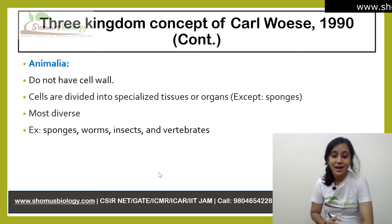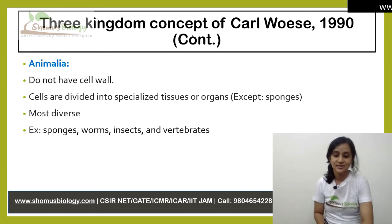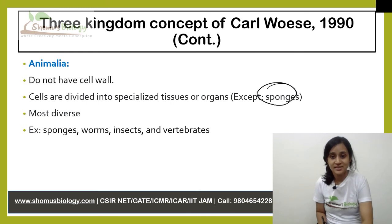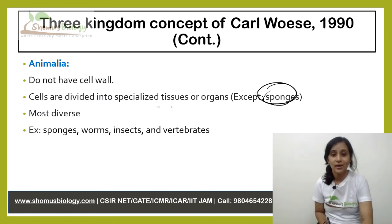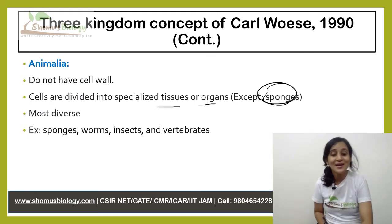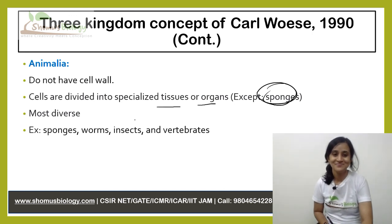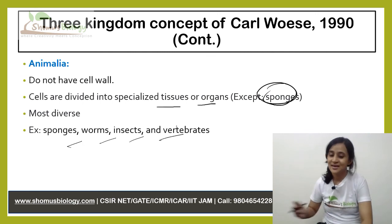Animalia. Unlike plants and fungi, animal cells do not have a cell wall. With the exception of sponges, cells are divided into specialized tissues or organs. Animalia is the most diverse kingdom, consisting of many different species varying dramatically from each other. Examples include sponges, worms, insects, vertebrates, etc.